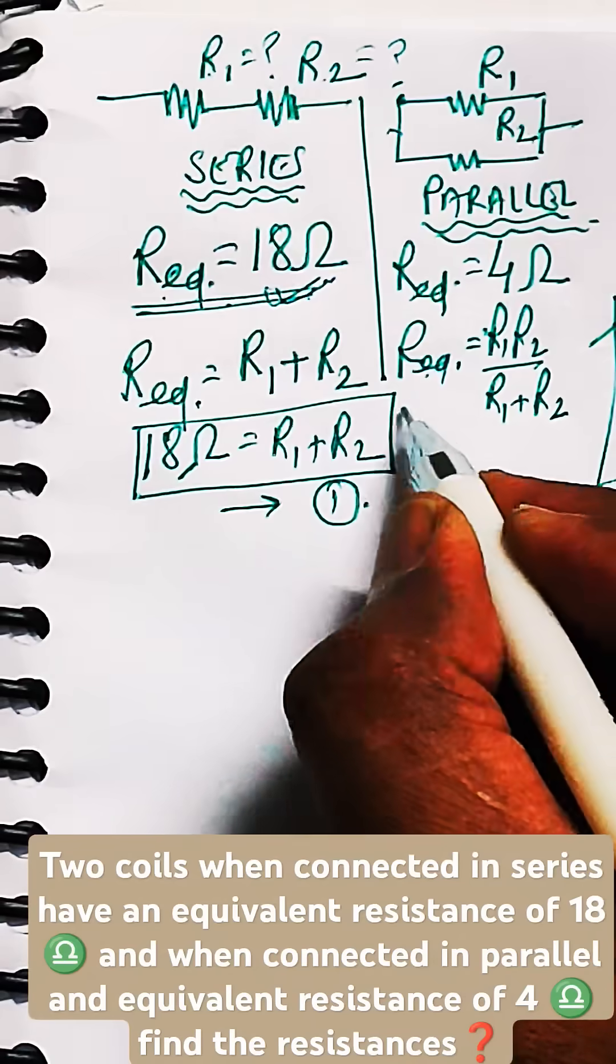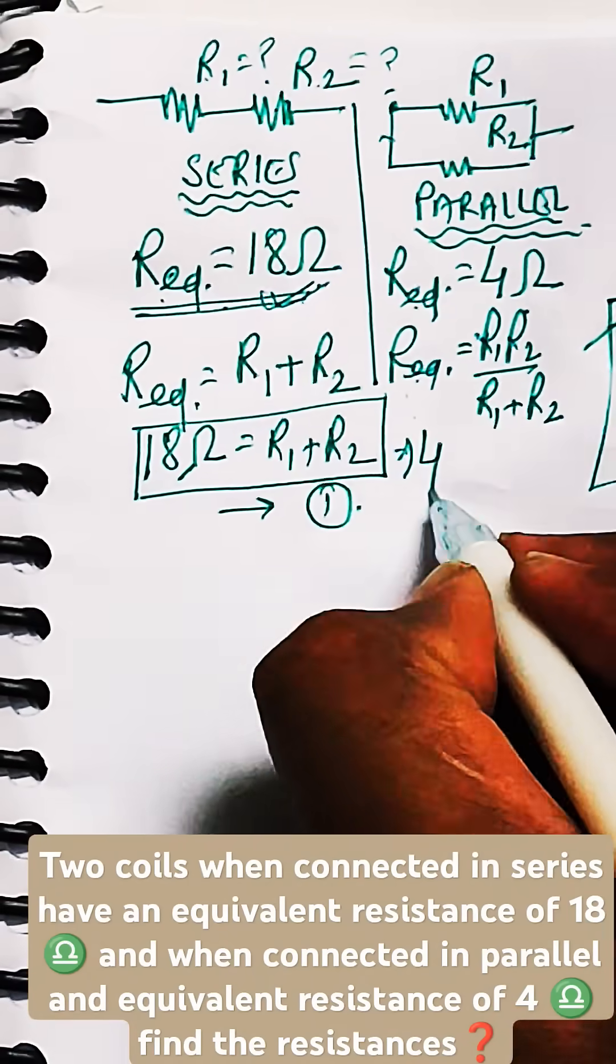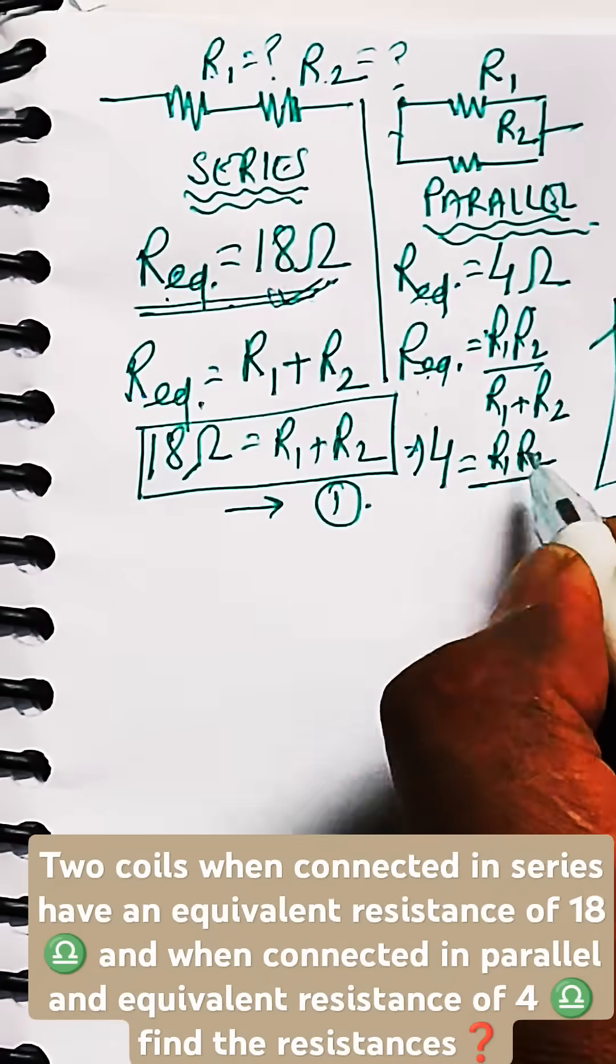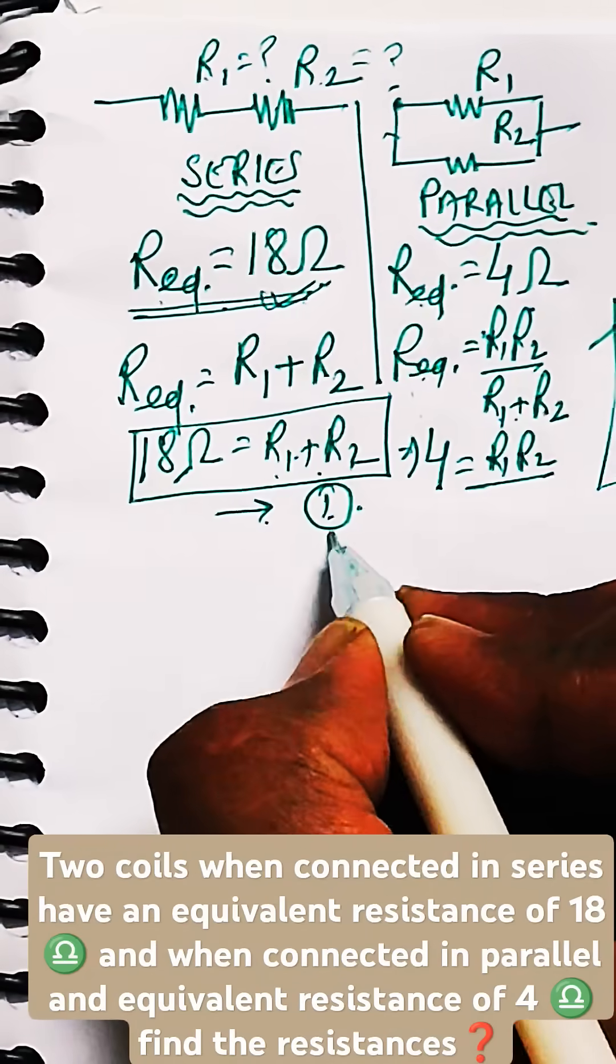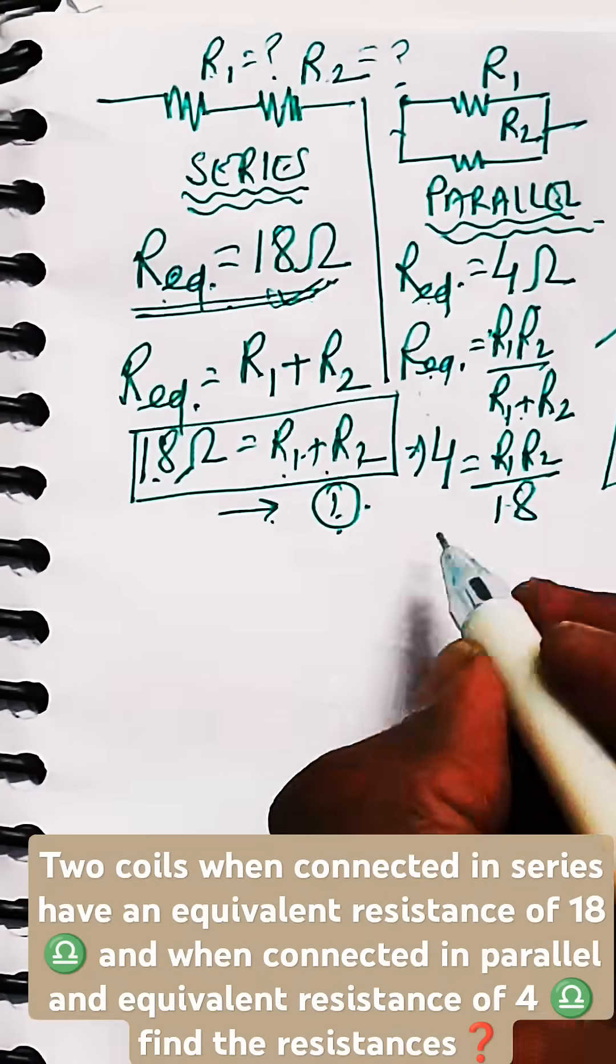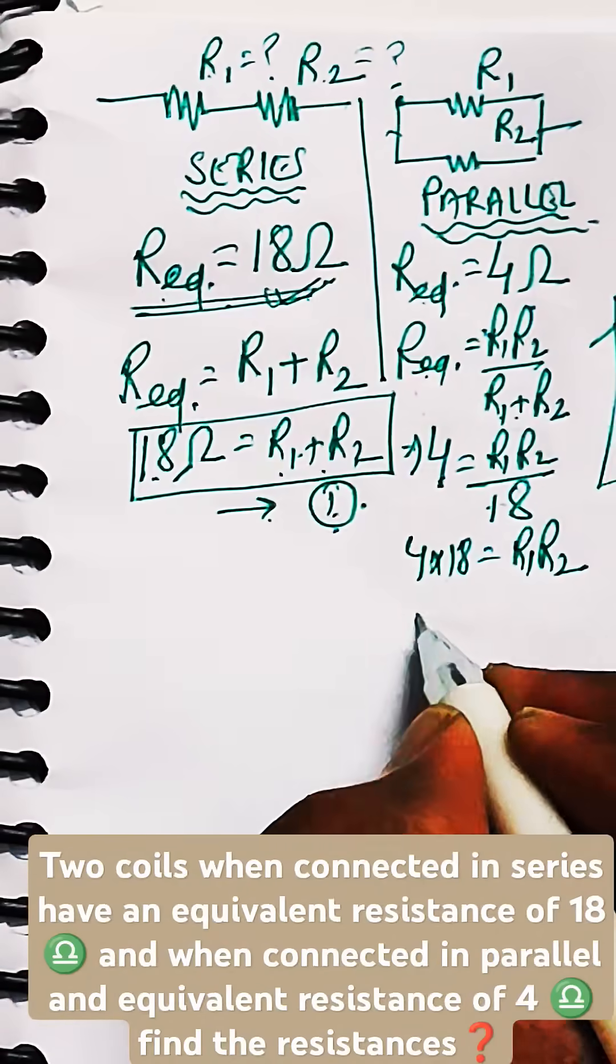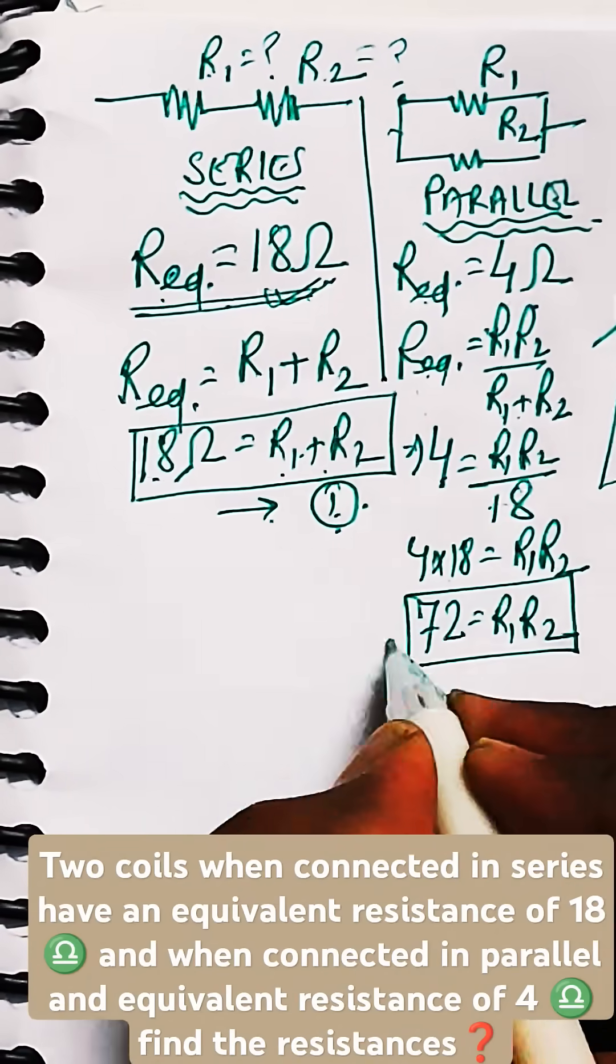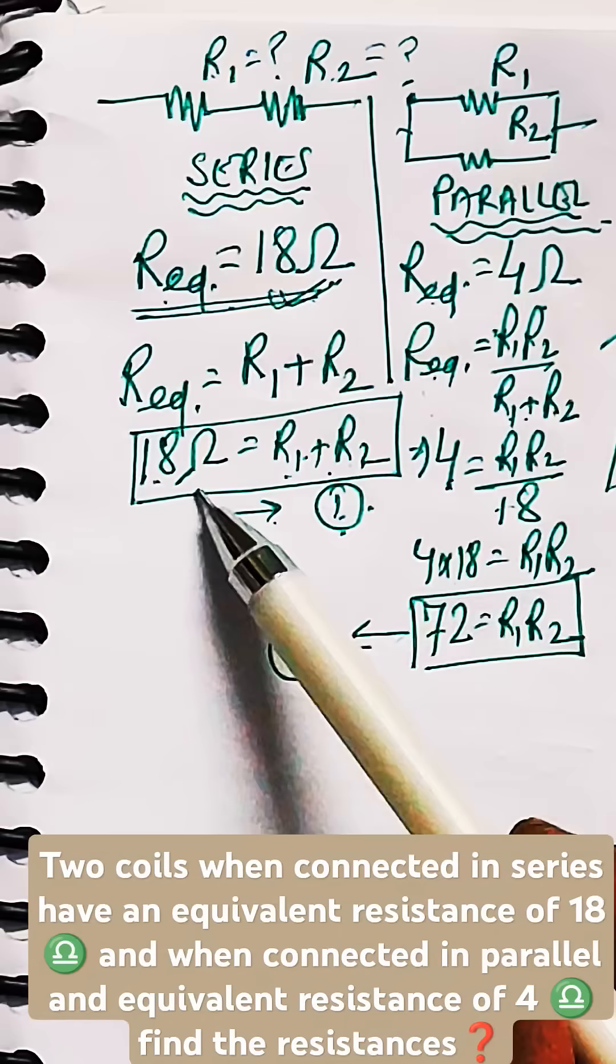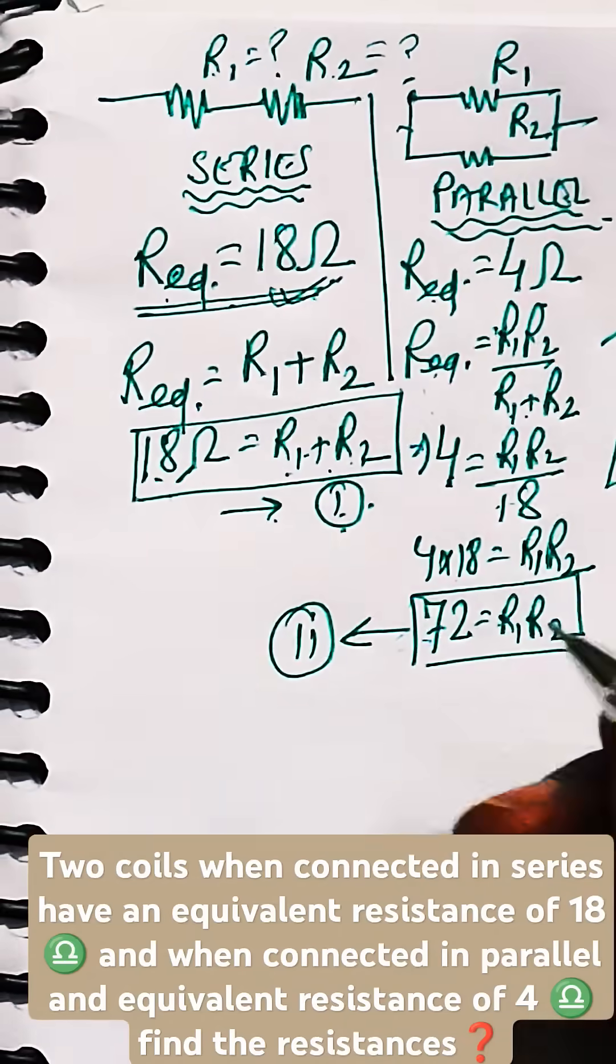Similarly when connected in parallel, equivalent resistance can be given by R1 R2 by R1 plus R2. We just put the value of 4 and substitute the value of R1 plus R2 from equation 1 as 18. And we get the value of R1 into R2 as 72. Let us say this is equation number 2.